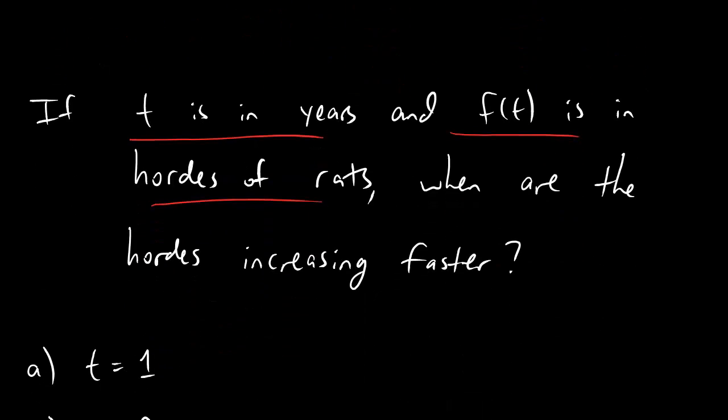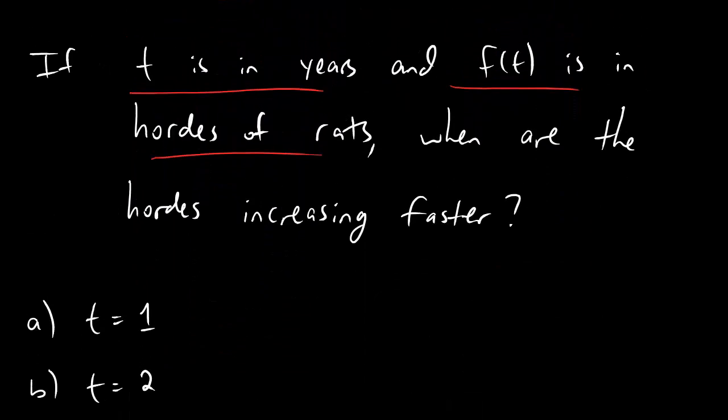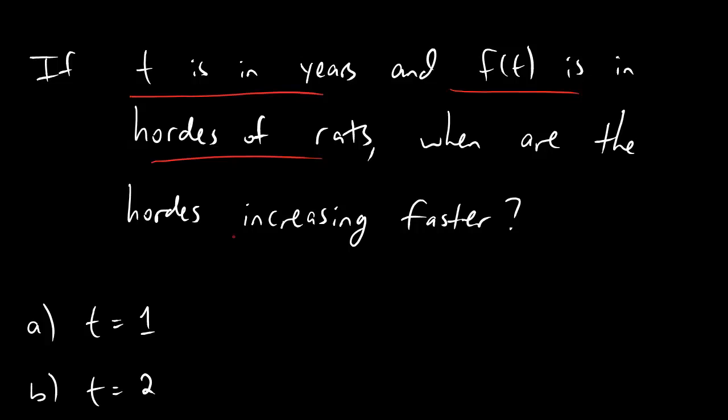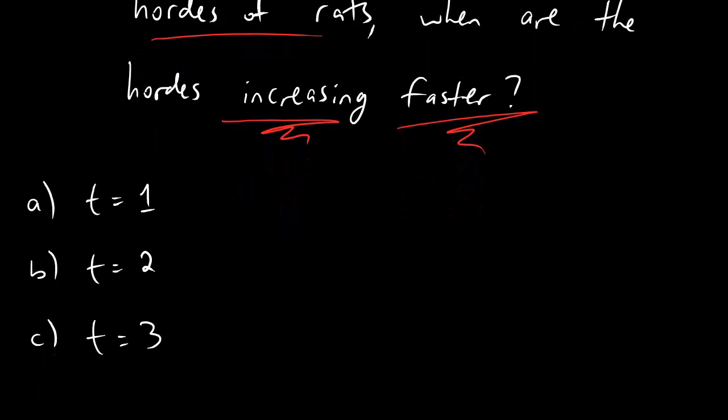We go back down here and it says when are the hordes increasing the fastest. Increasing means rate of change, that means derivative. And the fastest means just the biggest derivative. And we found that the biggest derivative or the steepest tangent line happened at time 3. Alright dudes, that's it. Catch you later.